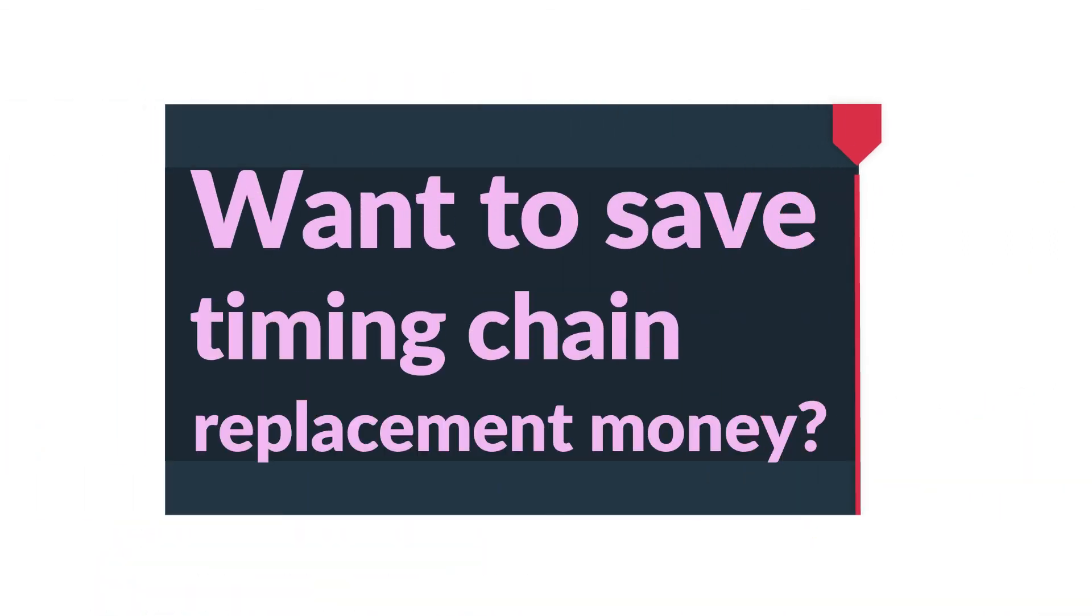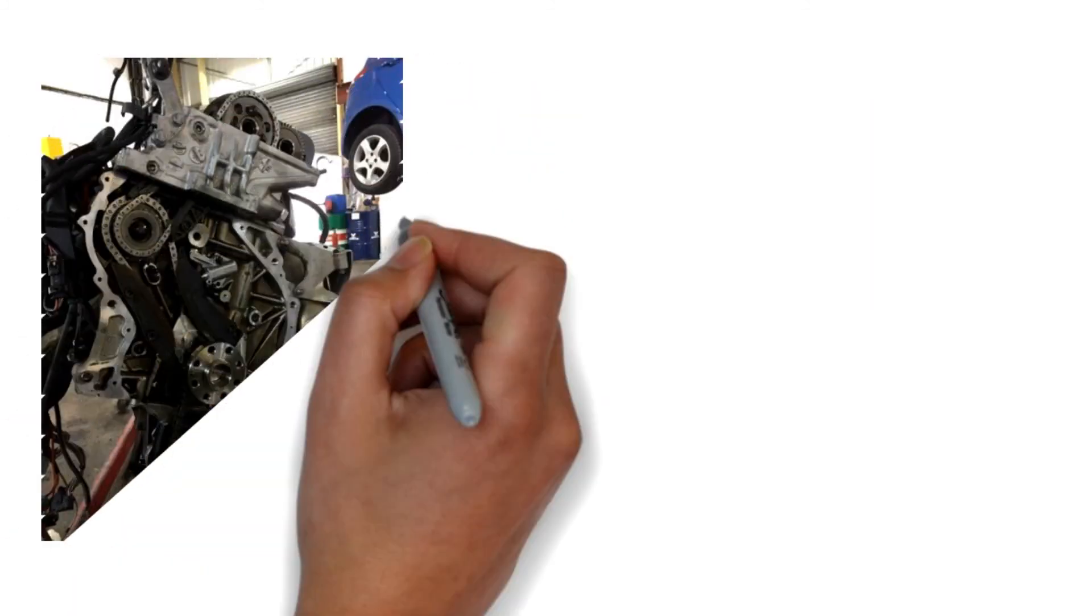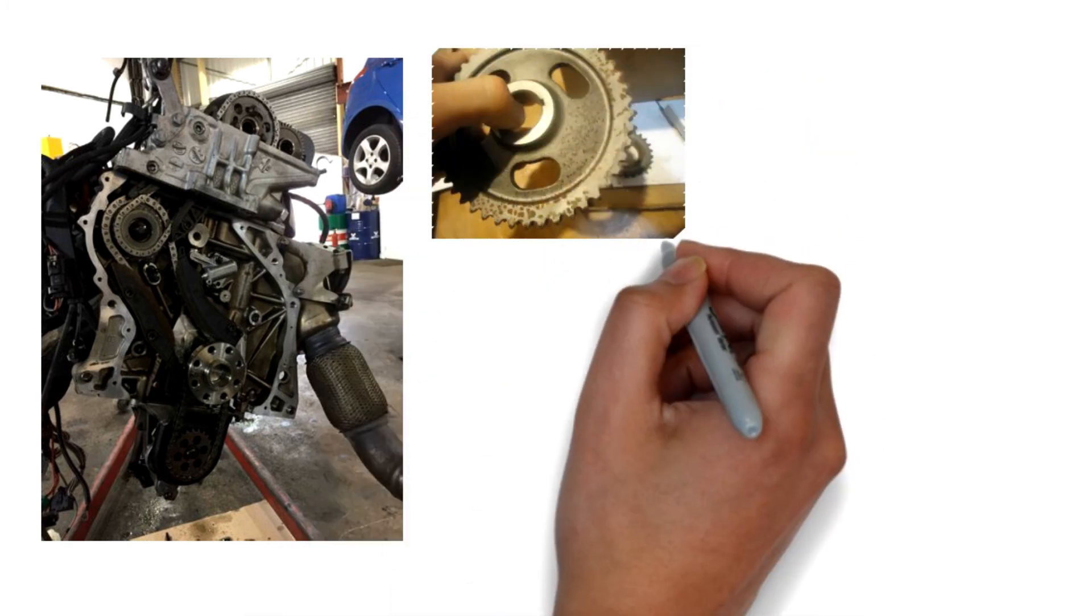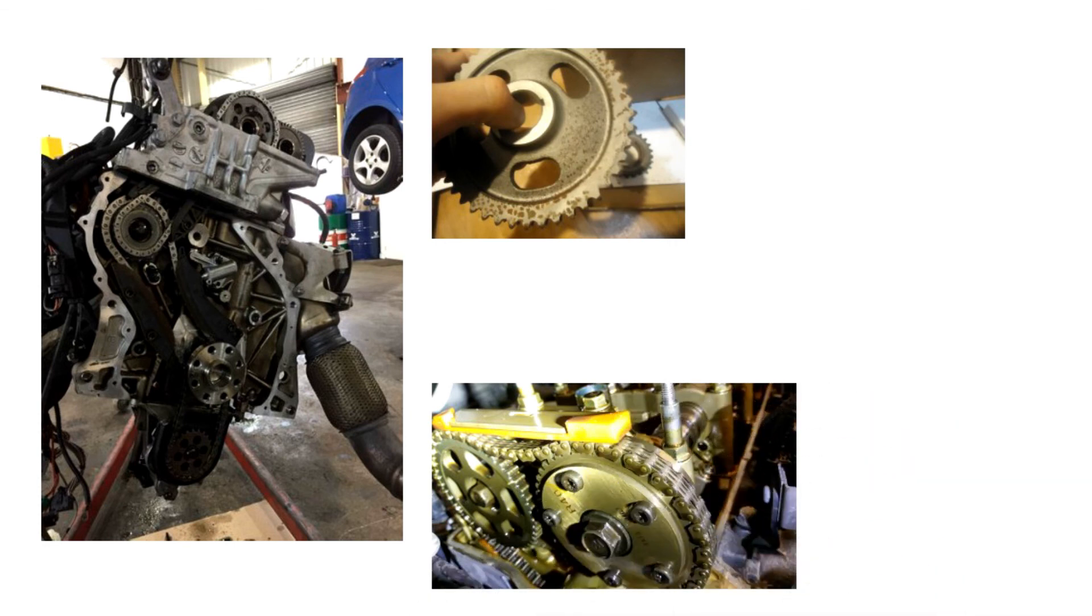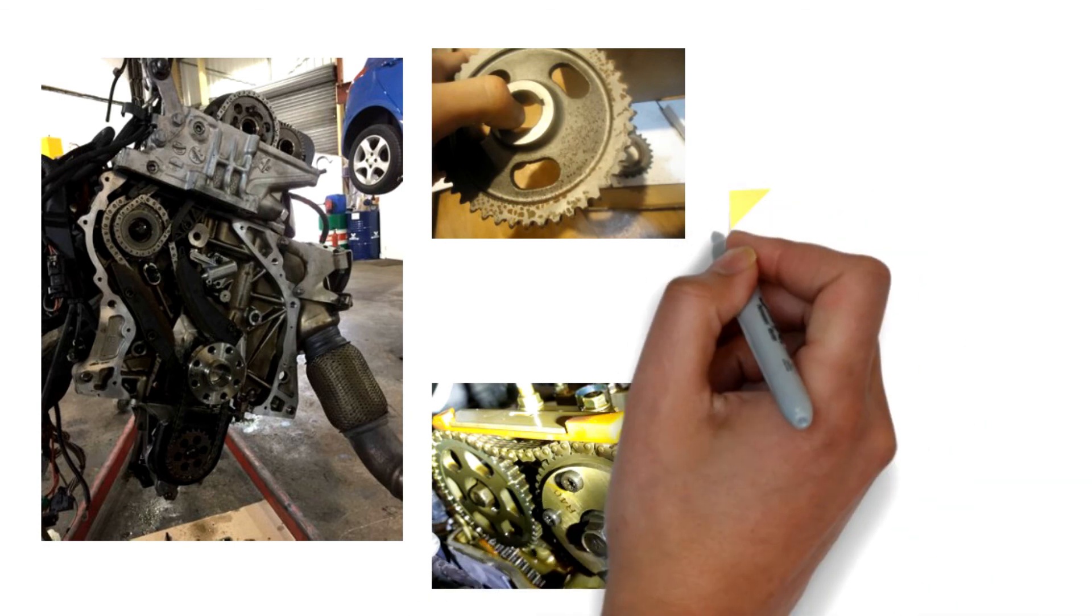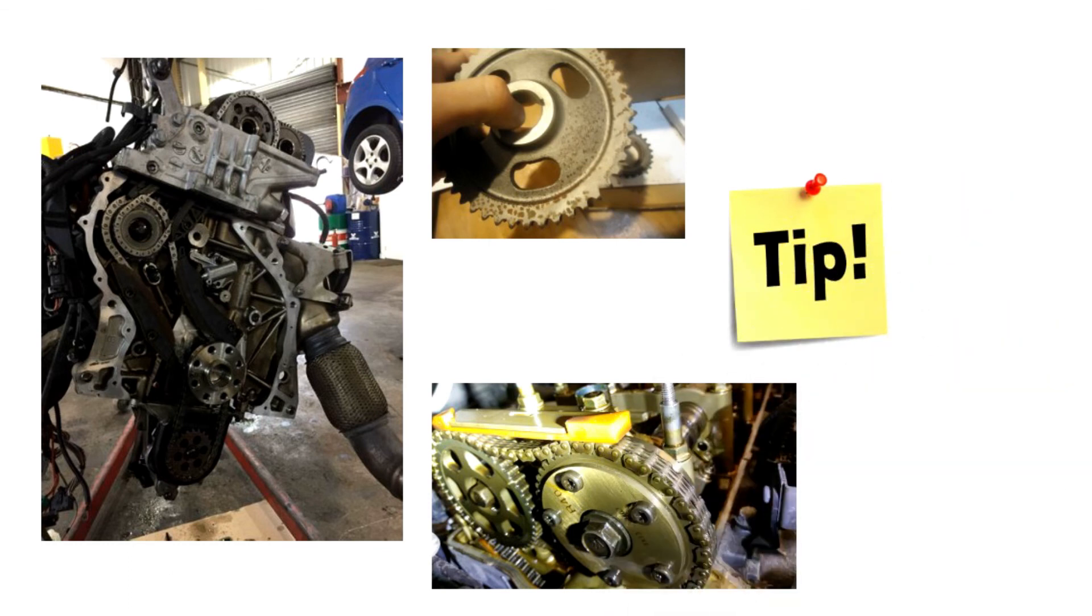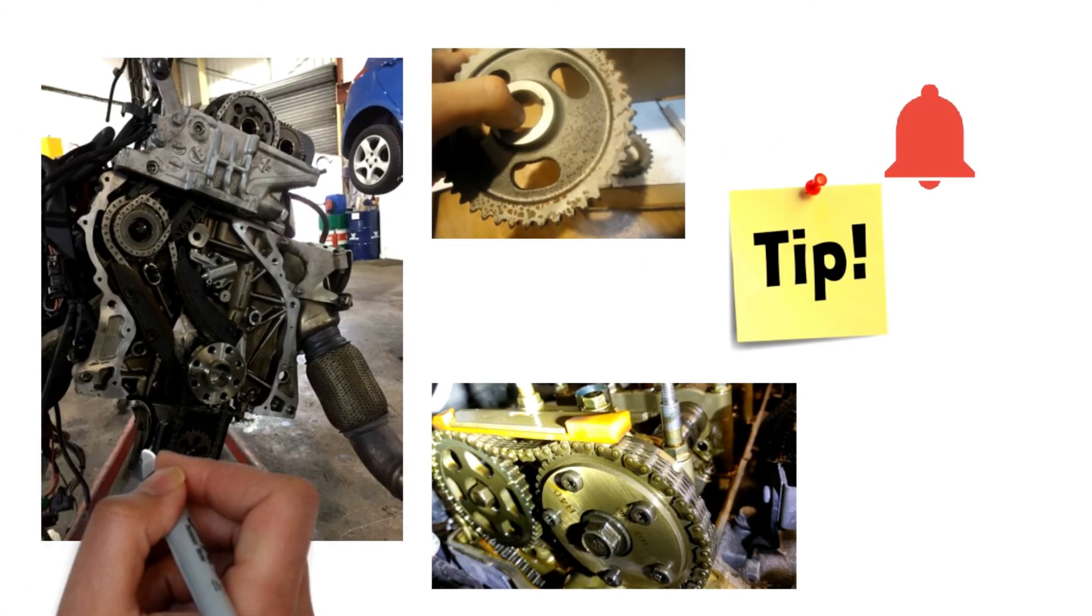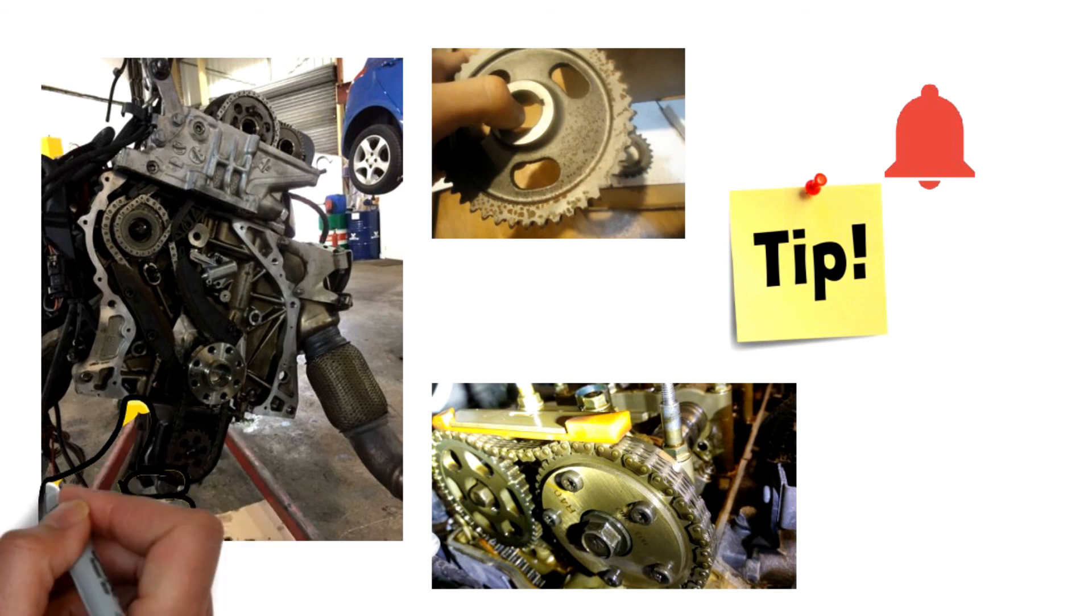More and more car owners now understand the necessity of timing chain replacement. Chain wears over time and so do the tensioner, cam phaser, VVT gears or the guides. There are some handy tips I want to share with you so that you can look after your timing chain system. So, please turn on the notification bell and make sure you keep on watching our next video as these hacks may help you to longer the timing chain system life cycle.